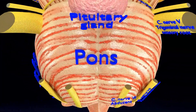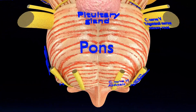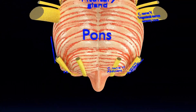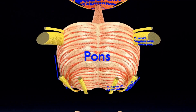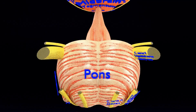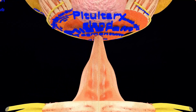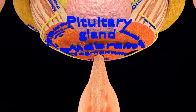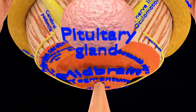The pons is now visible, with cranial nerve 5 — the trigeminal nerve — emerging at the level of the midpons. Also now visible is the pituitary gland, a pea-sized reddish-grey body that stores hormones from the hypothalamus and releases them into the bloodstream.